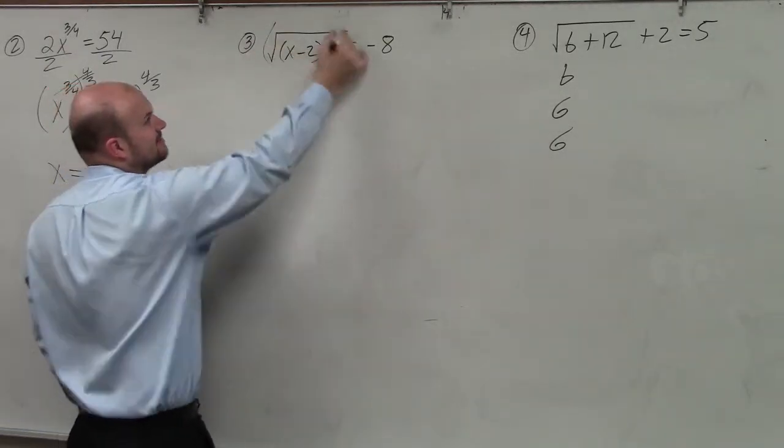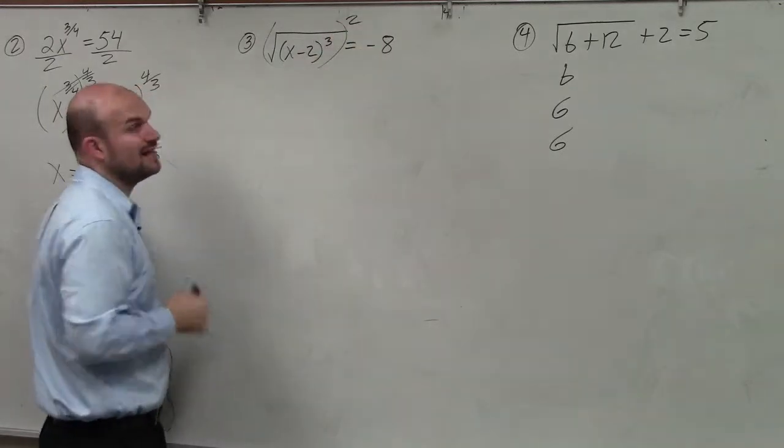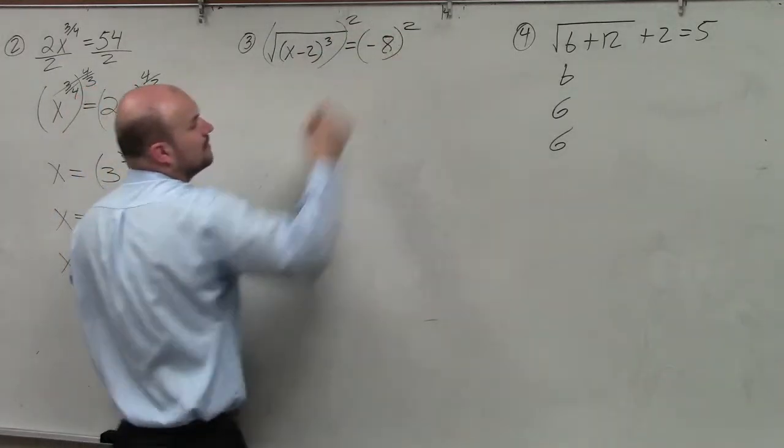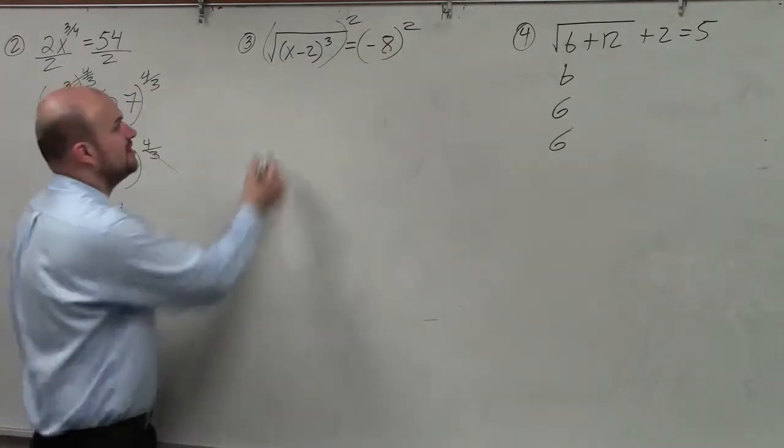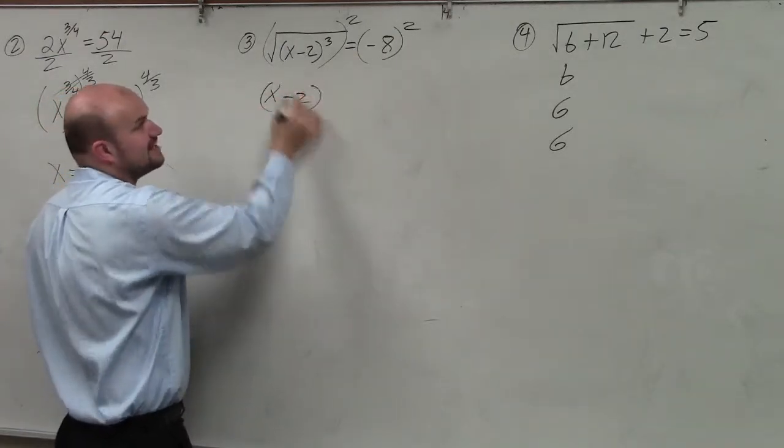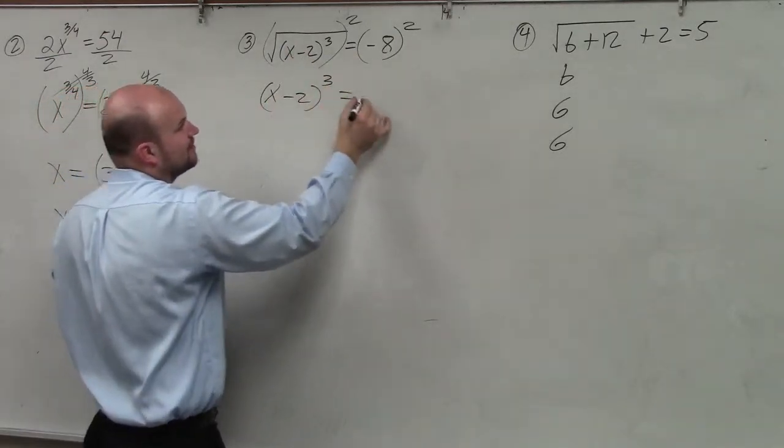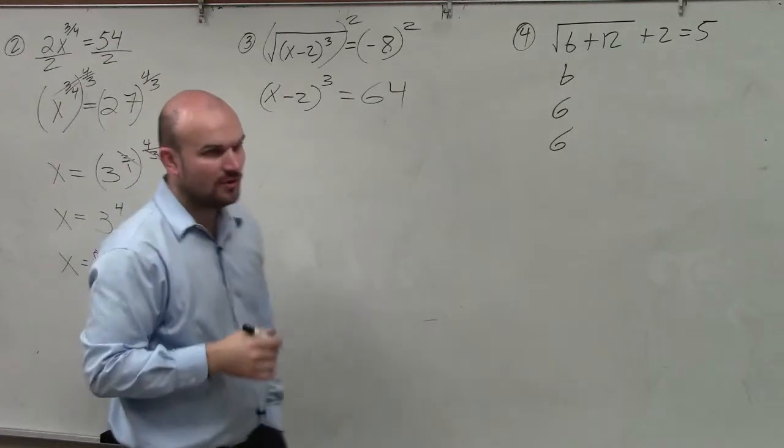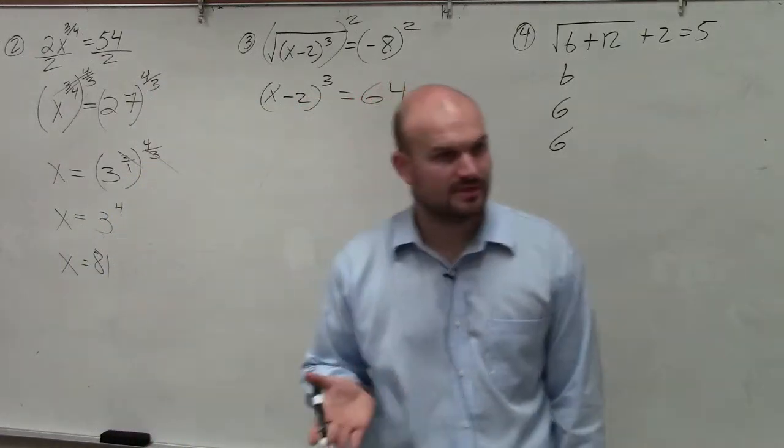So to get rid of this, you can square that. Square that. So therefore you have x minus 2, since it's isolated, cubed equals 64. Right? Does everybody follow me with this?